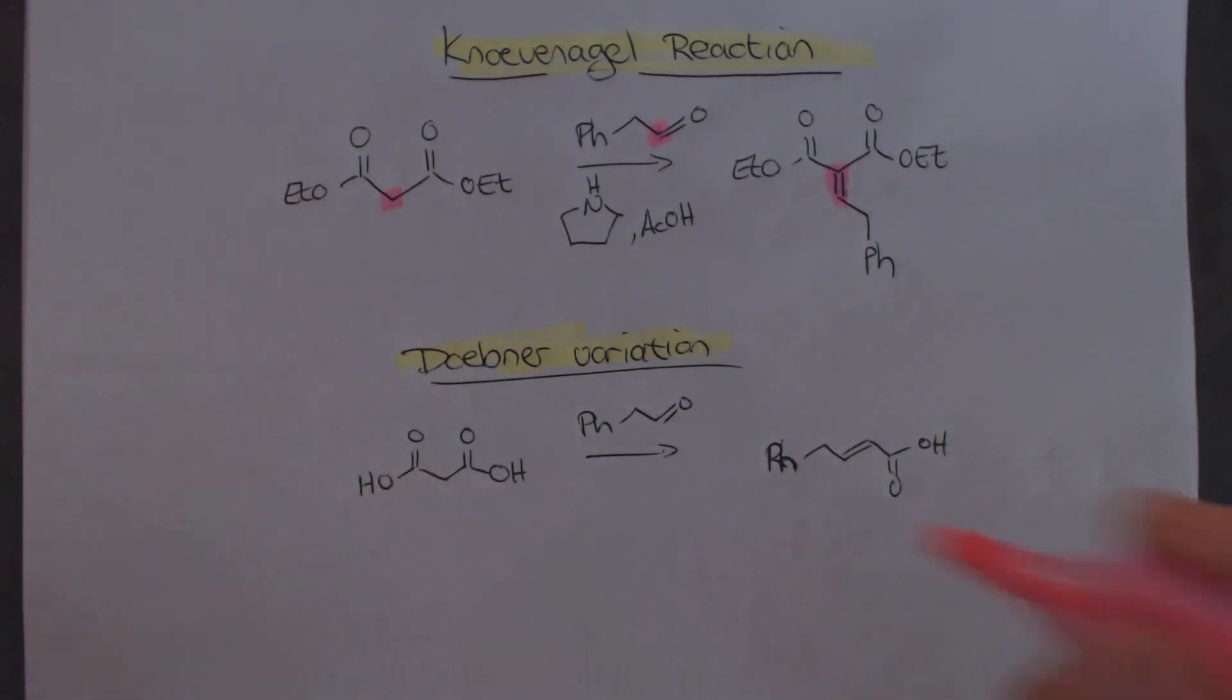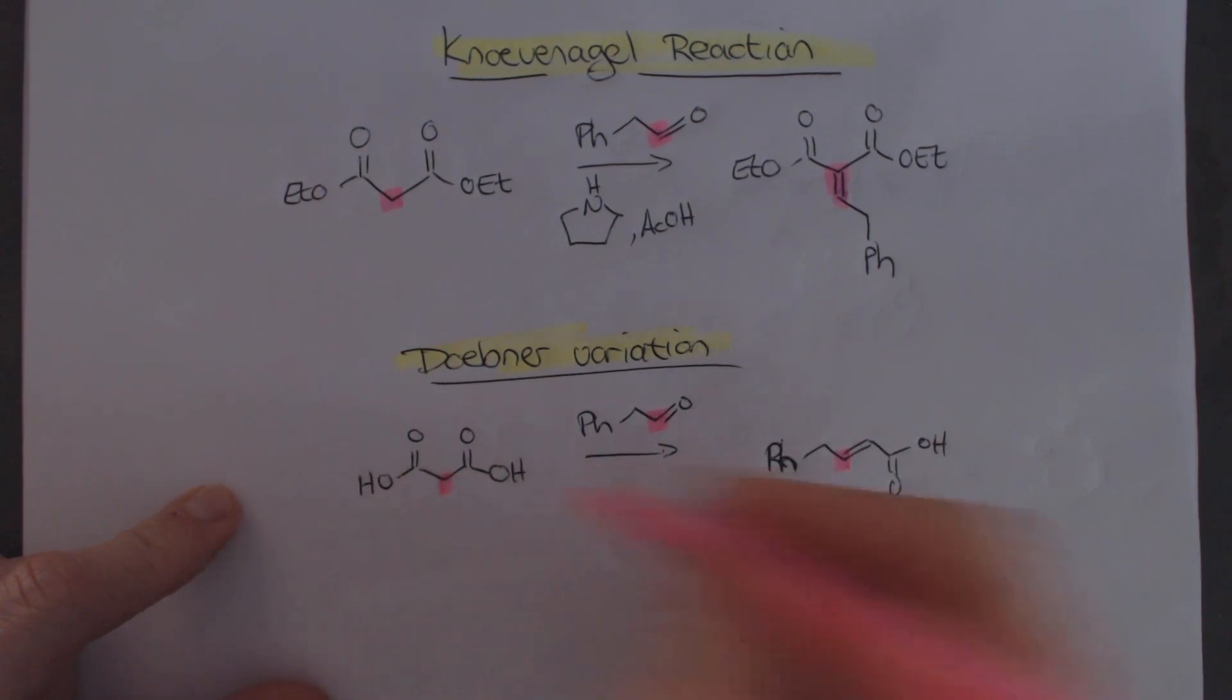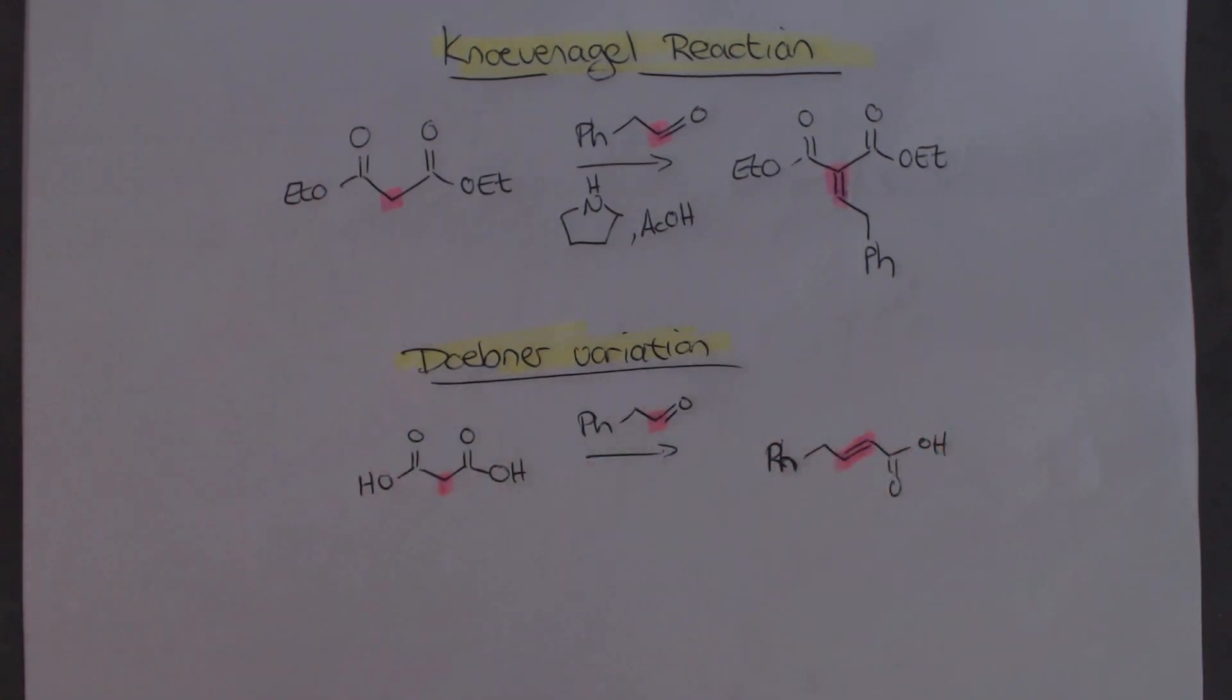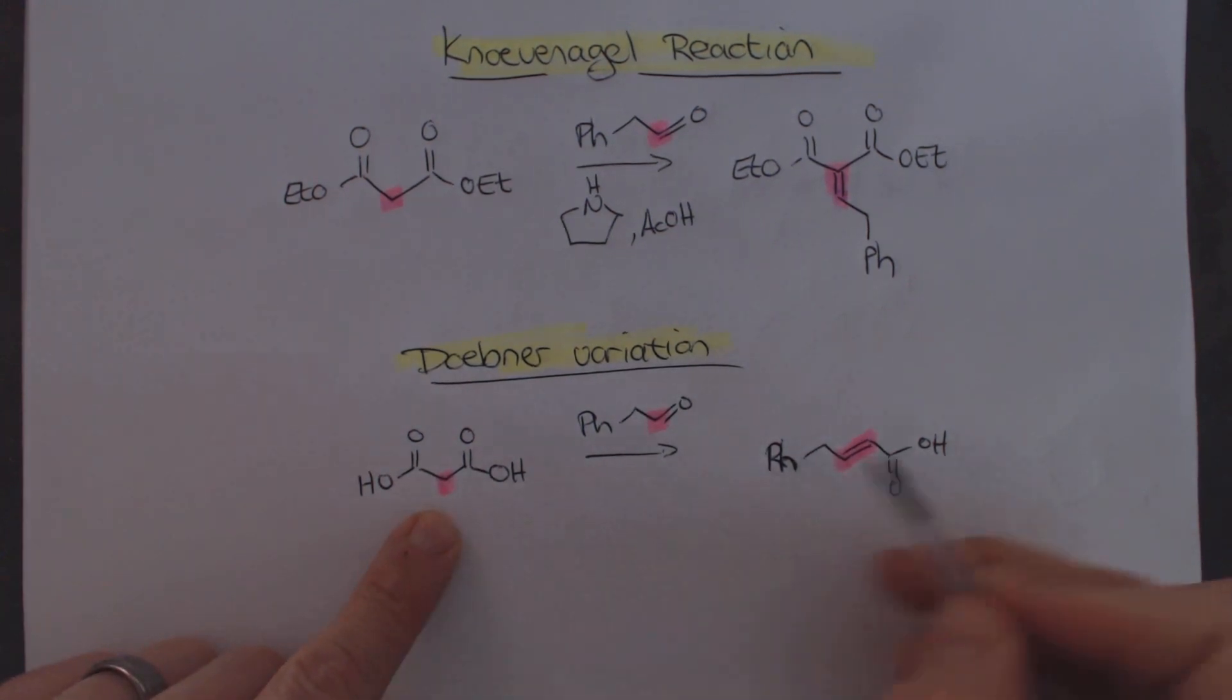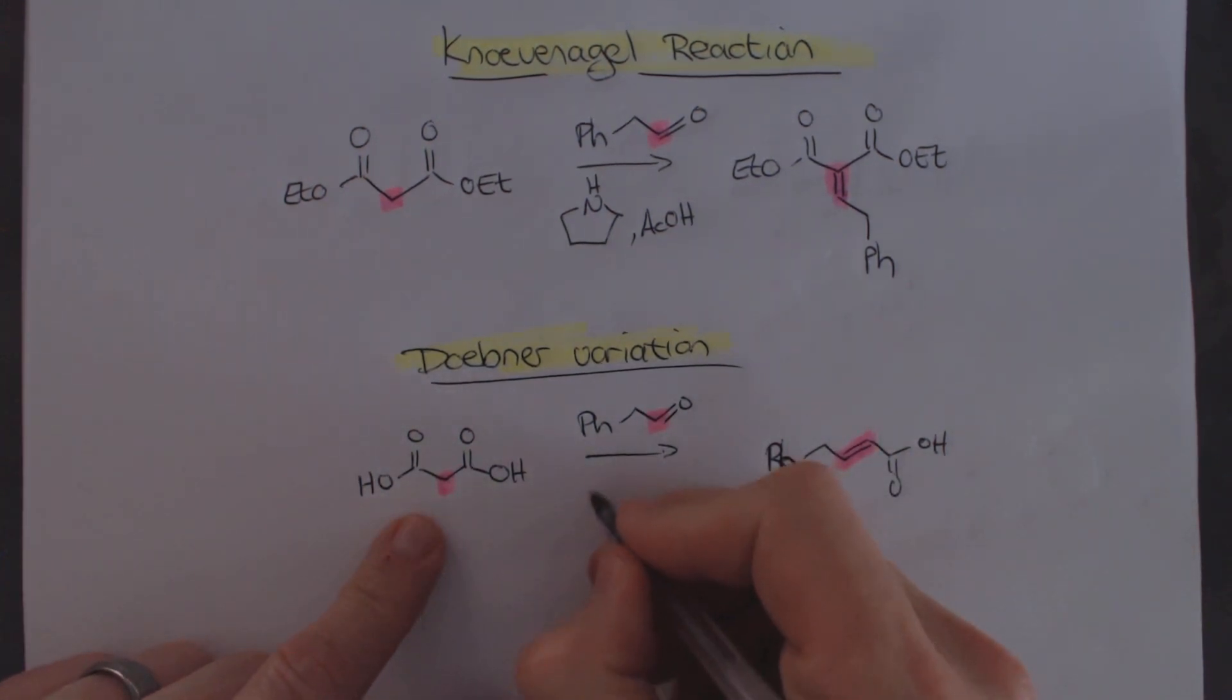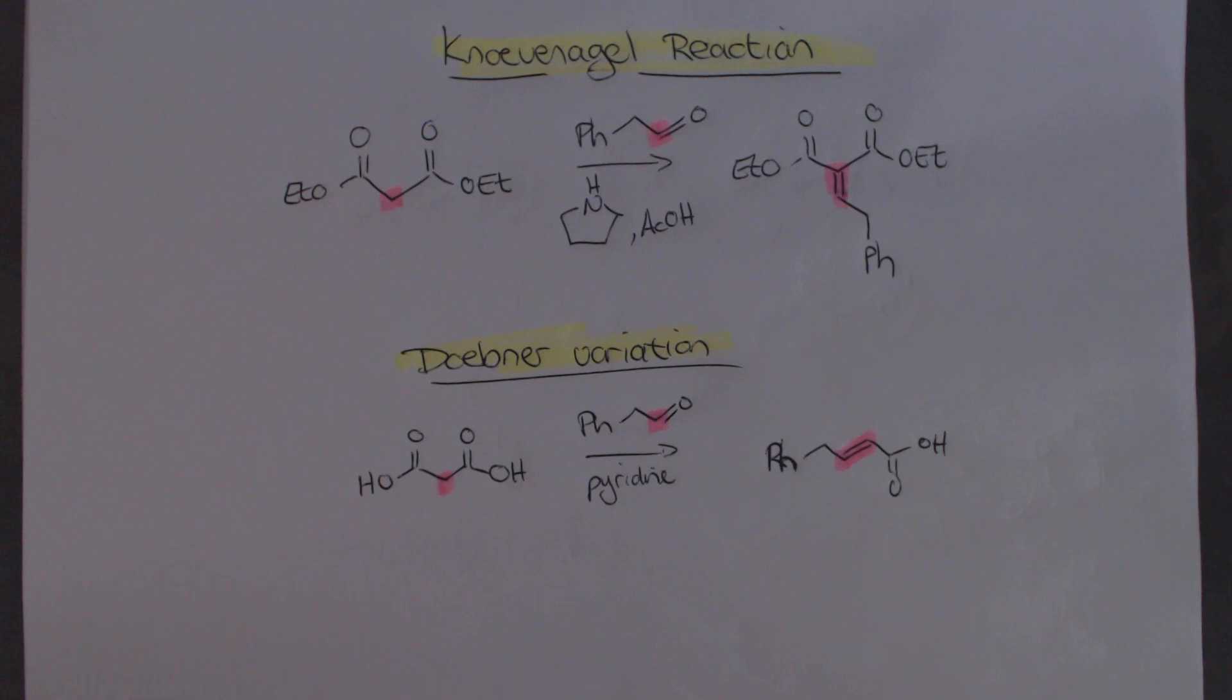So what we have is there's our carbon of that one, there's the carbon of this, which gives us that bond over there. But what we see is that actually a decarboxylation has happened in situ. Typically, this is done in solvents like pyridine, which is also acting as a base.